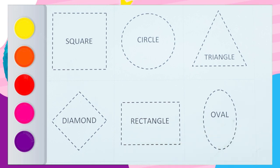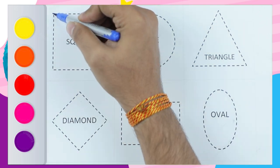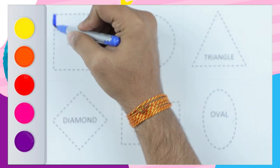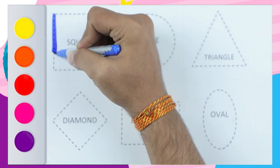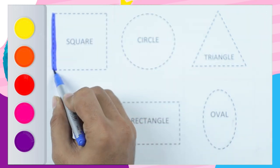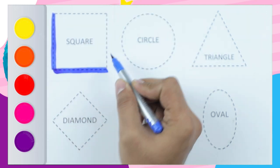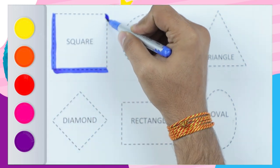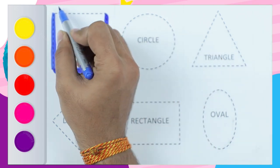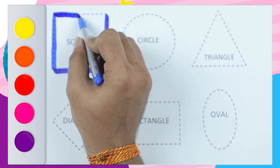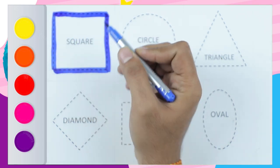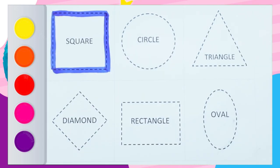Blue color square. Straight line, sleeping line, standing line, sleeping line. It's a square — blue color square.